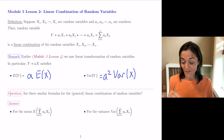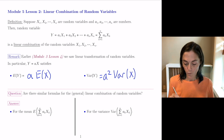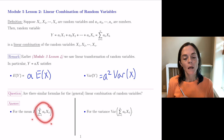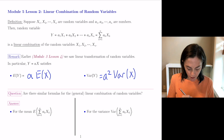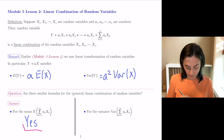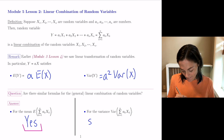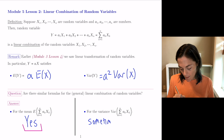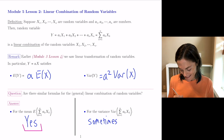Our first question today is: are there similar formulas for the mean and variance for a general linear combination of random variables? The answer is both yes and no. For the mean, absolutely — we have a formula for the expected value of a linear combination of random variables. For the variance, sometimes we have a formula. We will talk about both of these right now on the next page. I will underline this word 'sometimes.'